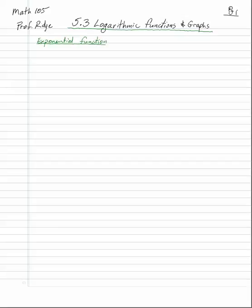In 5.2, we studied exponential functions. So let's graph y equals 2 to the x — that's the exponential function base 2. We plug in 0 for x: 2 to the 0 is 1, 2 to the 1 is 2, 2 to the negative 1 is 1 half. Going out further, 2 to the second is 4, and 2 to the negative 2 is 1 fourth.